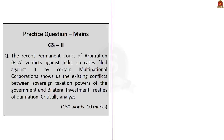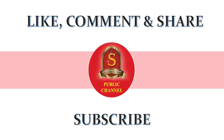The main GS Paper 2 question asks: the recent PCA verdicts against India on cases filed by certain multinational corporations shows existing conflicts between sovereign taxation powers of the government and bilateral investment treaties of our nation. Critically analyze. You should mention the issue of retrospective taxation, examples of Vodafone and Cairn Energy, how it affects bilateral investment treaties, and provide a suggestion as a conclusion, in 150 words. This concludes today's Hindu News Analysis. Please like, comment, share, and subscribe to Shankar IAS Academy YouTube channel for more updates related to civil service examination preparation.